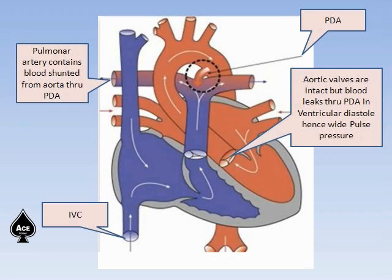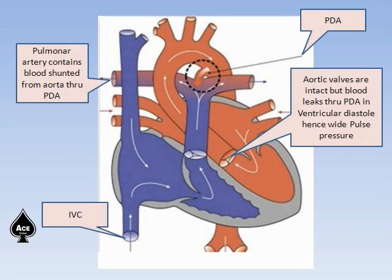This picture shows the anatomy of the PDA. What is circled is marked as the PDA and you can see the flow of blood. The color in the pulmonary branches is changing from blue to slight pink because of the mixture of red blood from the left side with the blue blood from the right side in the branch of the pulmonary artery. The anatomy also shows the pulmonary artery containing blood shunted from the aorta through the PDA, inferior vena cava, superior vena cava, and the tricuspid valve pumping blood from the right ventricle to the trunk of the pulmonary artery. The aortic valves are intact in PDA, but blood leaks through the PDA during ventricular diastole, hence wide pulse pressure occurs.